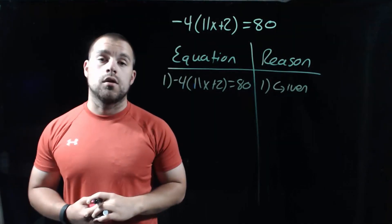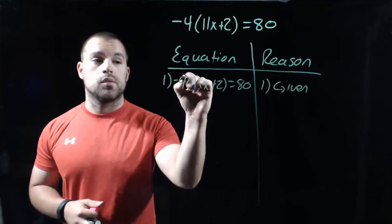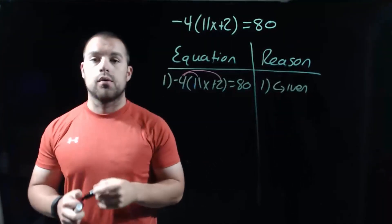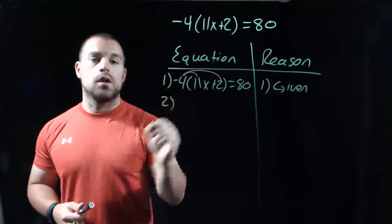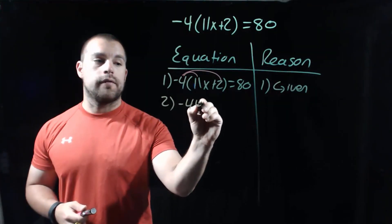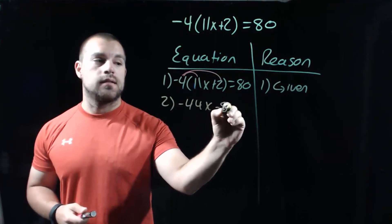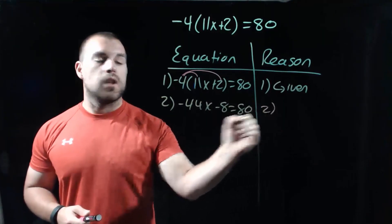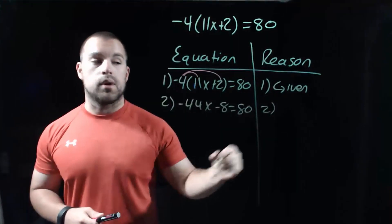The first thing we're going to have to do is use our distributive property. So we're going to distribute this negative 4 through the parentheses. In step number 2, we end up with negative 44x minus 8 equals 80. And our reason there is the distributive property.